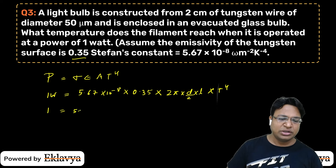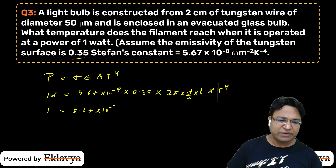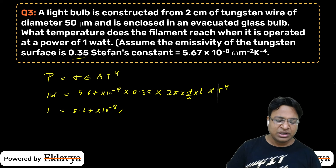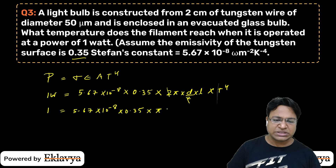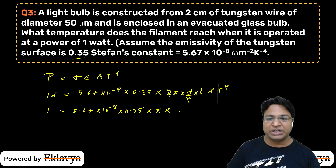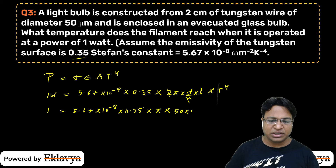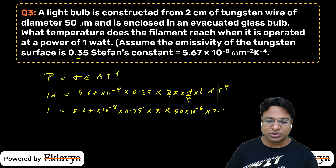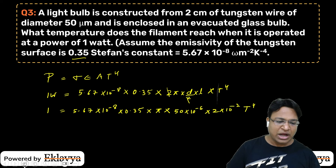This is a question on Stefan's Law. We write: power = σεAT⁴. Power = 1 W. σ = 5.67 × 10⁻⁸. Emissivity ε = 0.35. Area = 2πr·l = 2π(d/2)·l = π·d·l. So: 1 = 5.67×10⁻⁸ × 0.35 × π × (50×10⁻⁶) × (2×10⁻²) × T⁴.